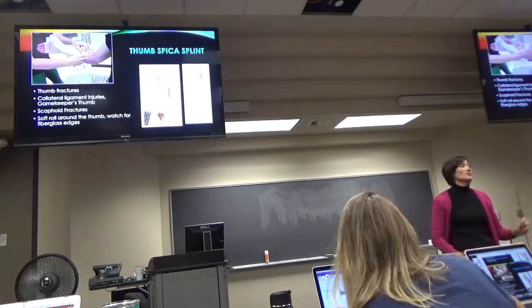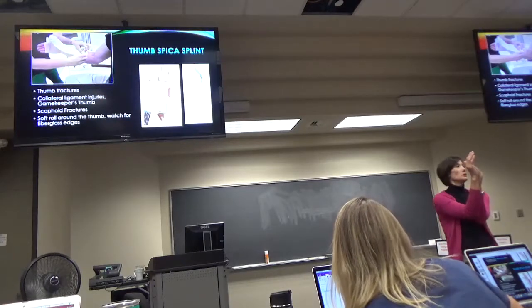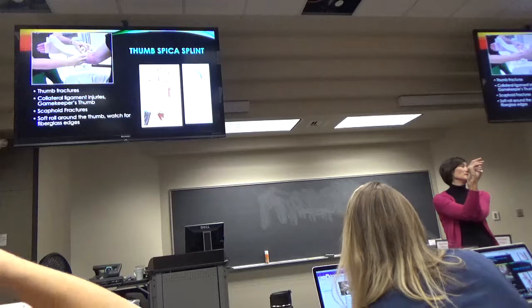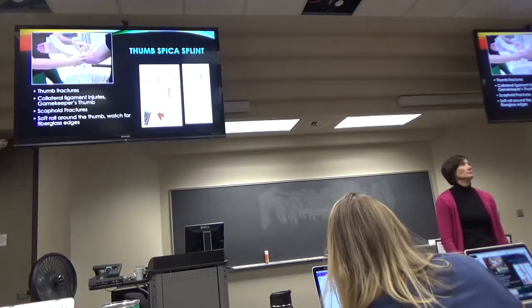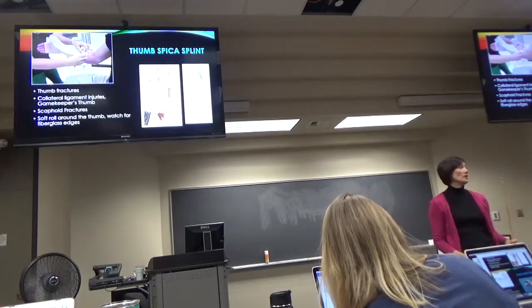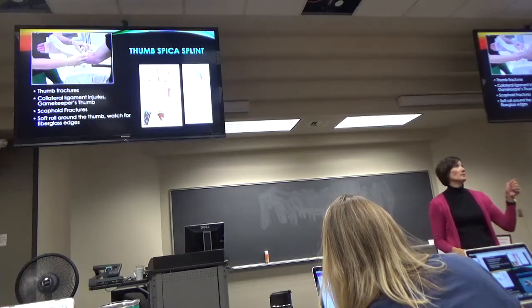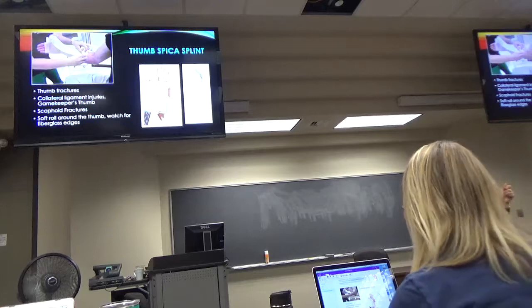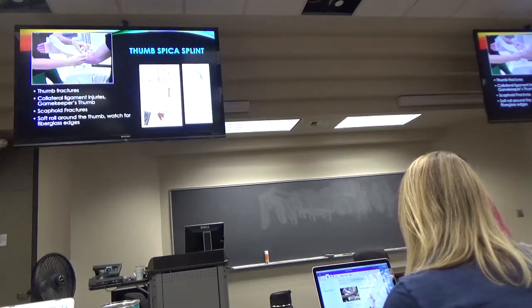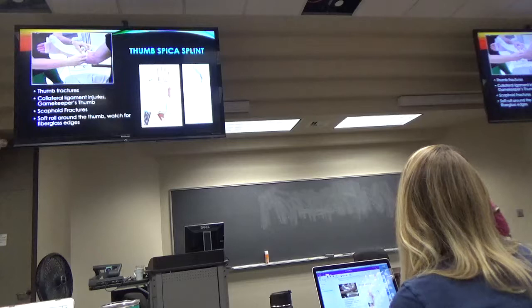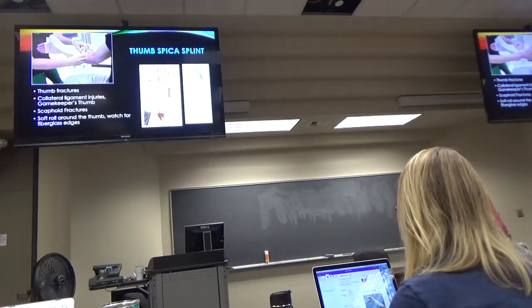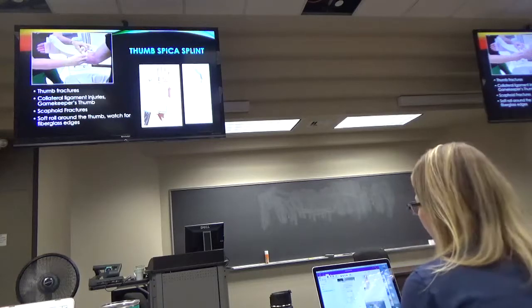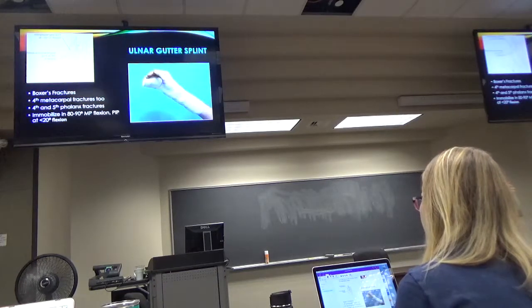Thumb spica. This is just basically taking what you would have used for a volar splint and moving it over to the side. So, you're immobilizing the thumb. So, scaphoids, thumb injuries. Again, lots of soft roll. Check the thumb. Don't soak the patient. That's a bad one, too. If you soak them with a thumb spica, it sits right in there. And it'll come back. Just cut the macerated skin. It's awful.